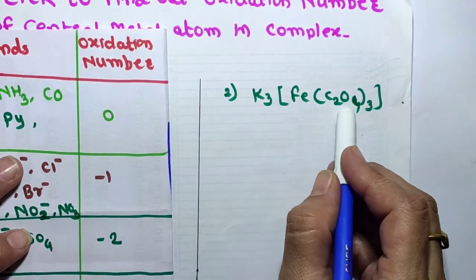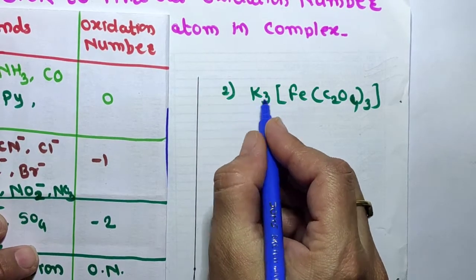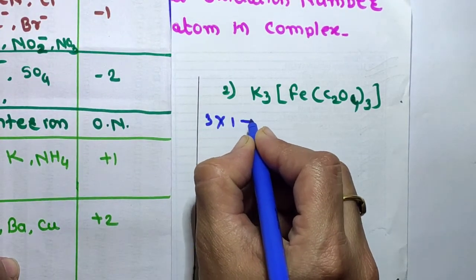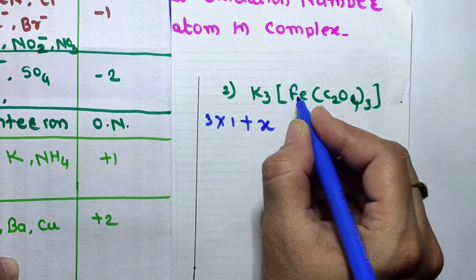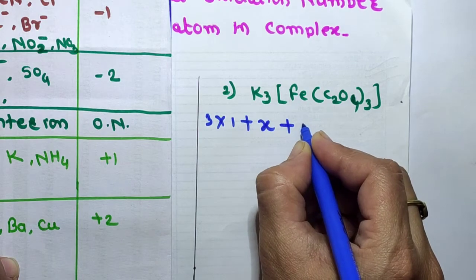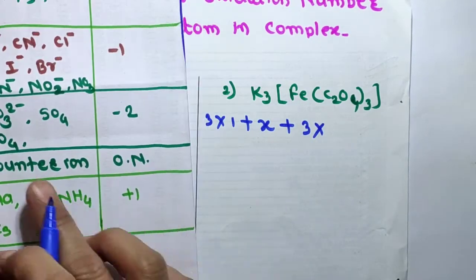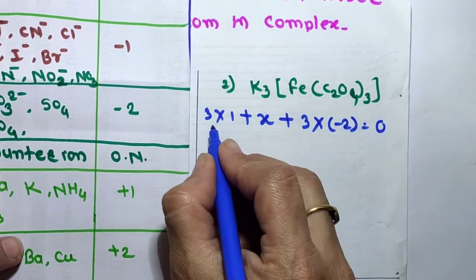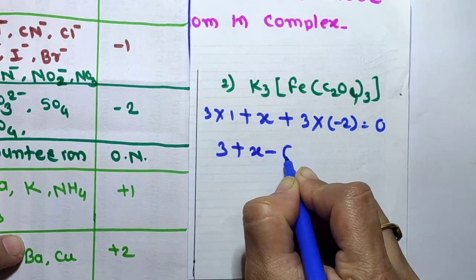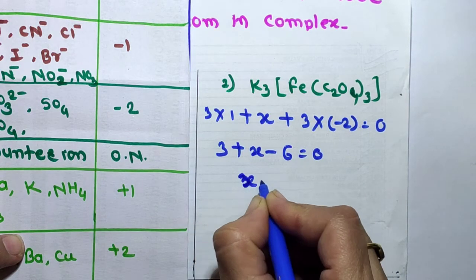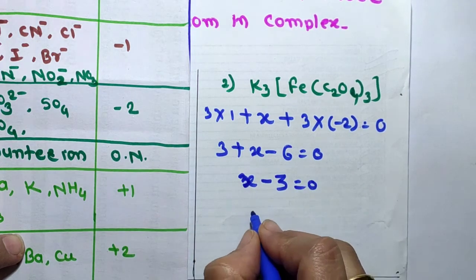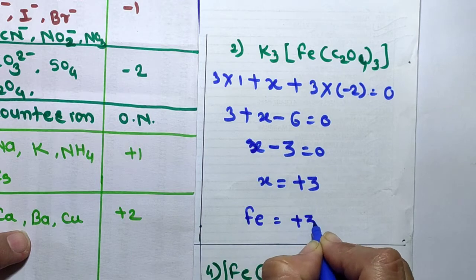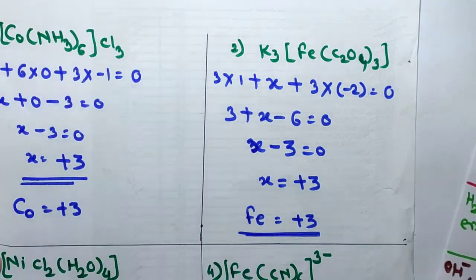Second example: K3[Fe(C2O4)3]. Potassium is a counter ion with oxidation number +1. So: 3×(+1) + X + 3×(−2) = 0. That gives 3 + X − 6 = 0, so X − 3 = 0, therefore X = +3. Iron has oxidation state +3 in this complex.